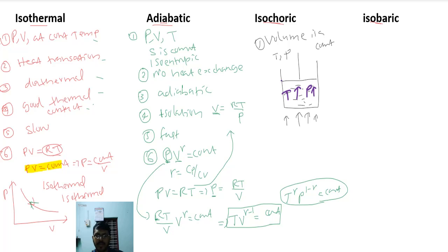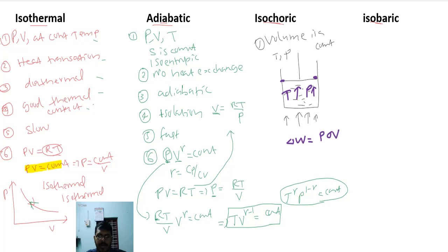If the piston is made immovable, the volume will not change, but temperature and pressure will change. Work done is zero because work done δW = P·δV, and if the change in volume is zero, work done will be zero.